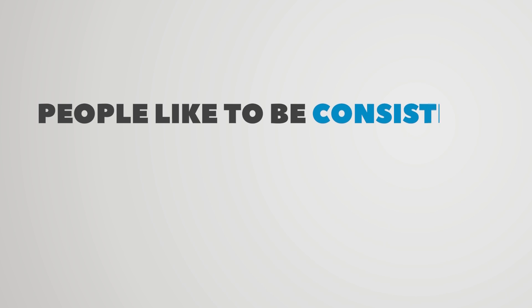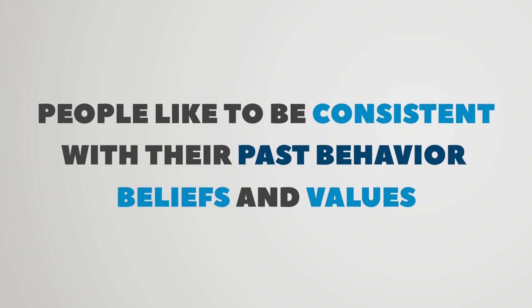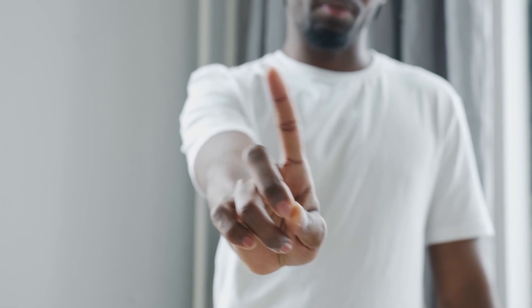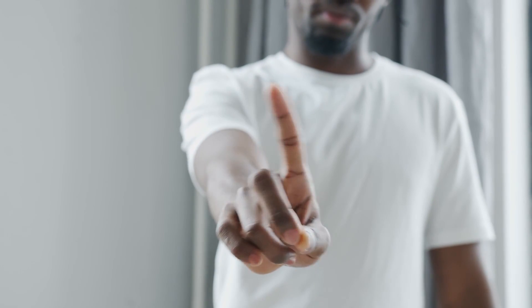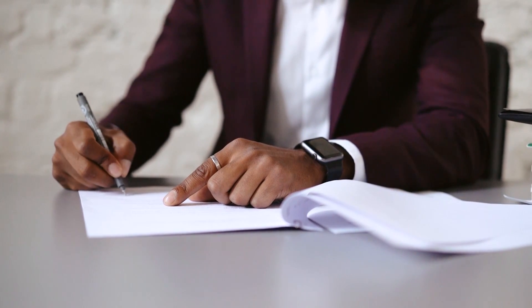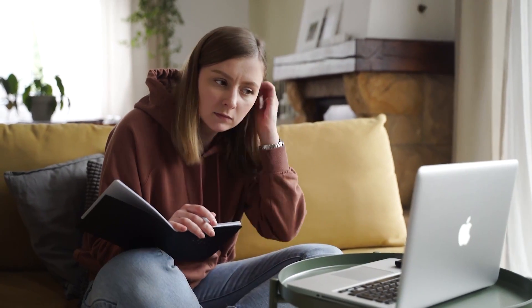The fourth principle is consistency. This principle states that people like to be consistent with their past behavior, beliefs, and values. People do not like to contradict themselves, and the trick here is getting the other person to say yes to small commitments before asking for bigger commitments. This can be something as simple as signing up for a newsletter or attending a free webinar. Once they've made this initial commitment, they're more likely to follow up on their action and comply with your larger requests later on.